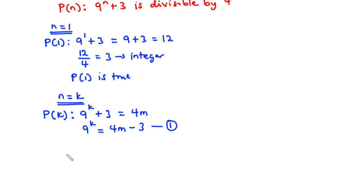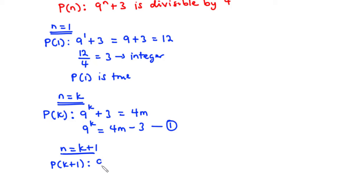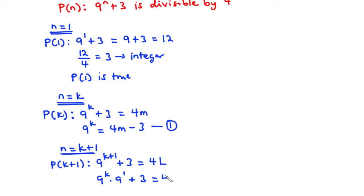For the last step, we prove the statement is true for the next term, that is n equals k plus 1. So P(k+1): substituting k plus 1 in place of n, we have 9^(k+1) plus 3 equals 4l. Expanding using the laws of indices: 9^k times 9^1 plus 3 equals 4l.